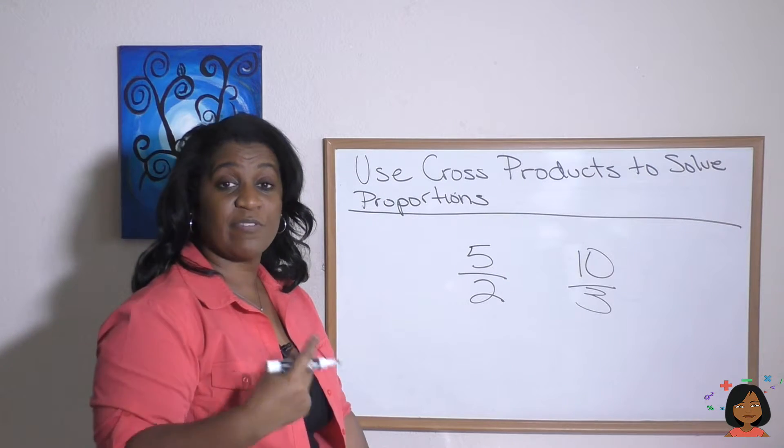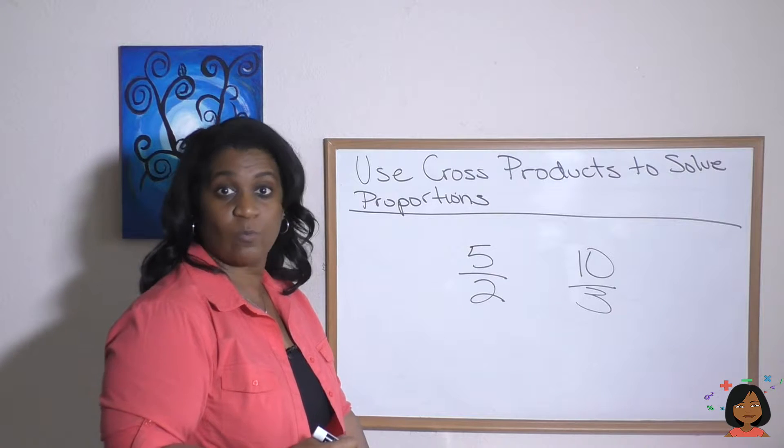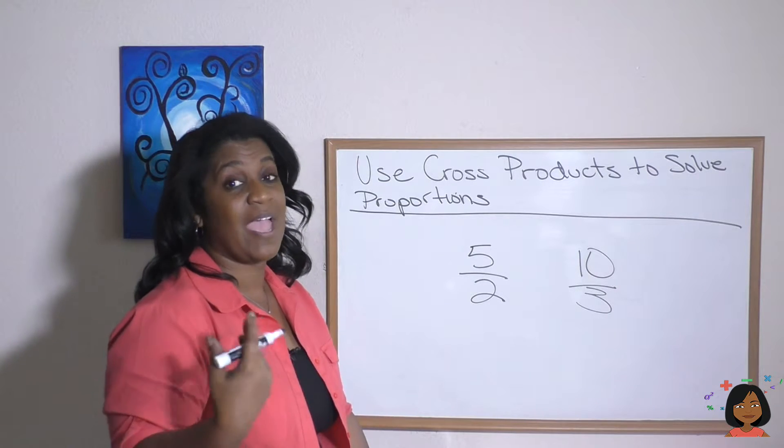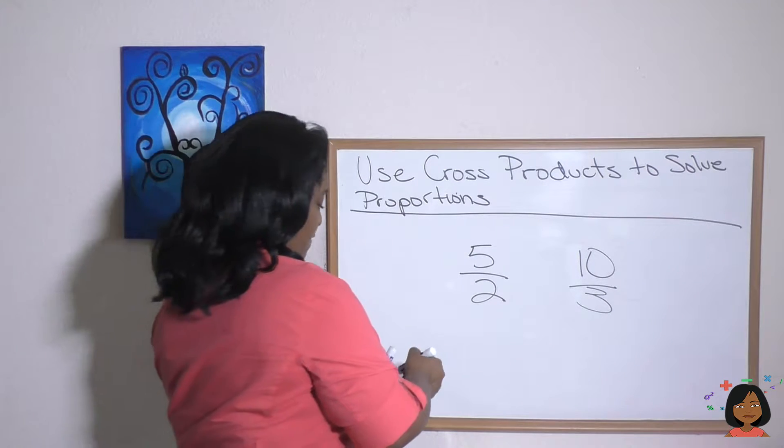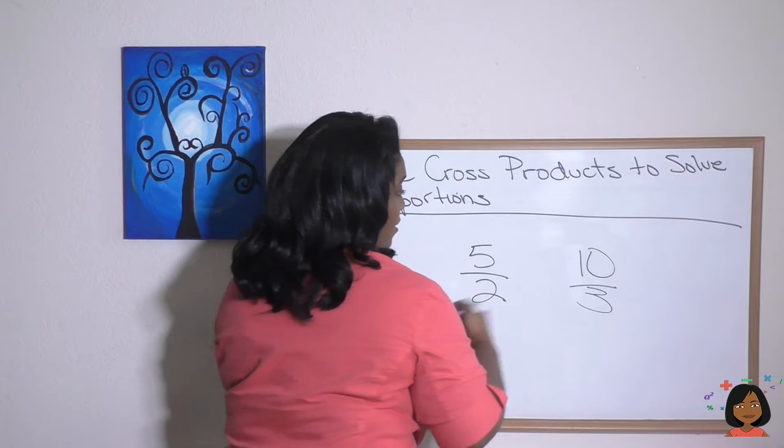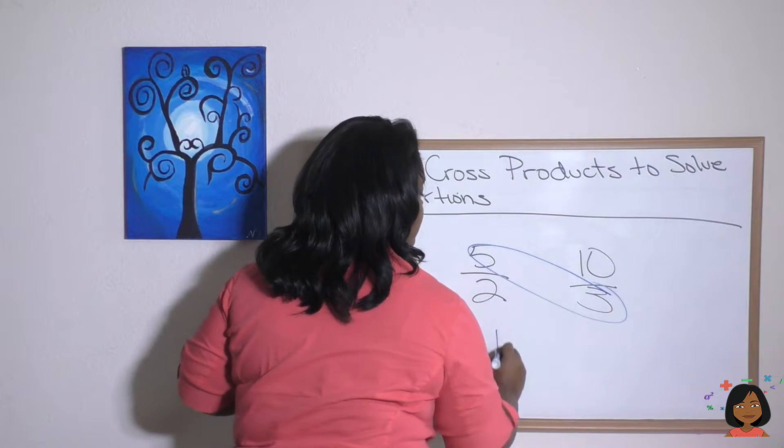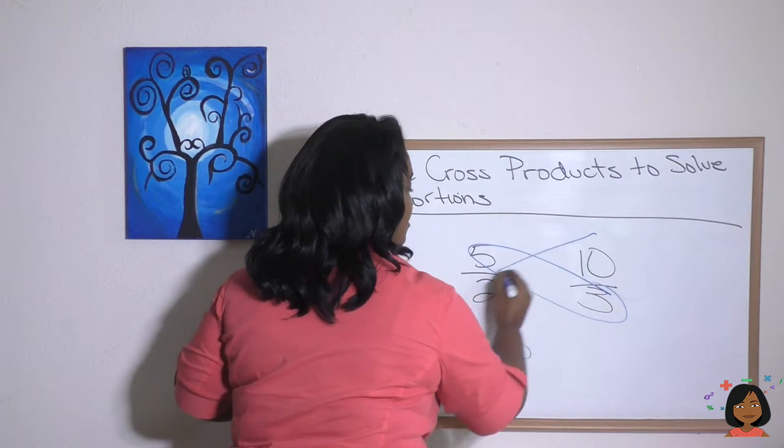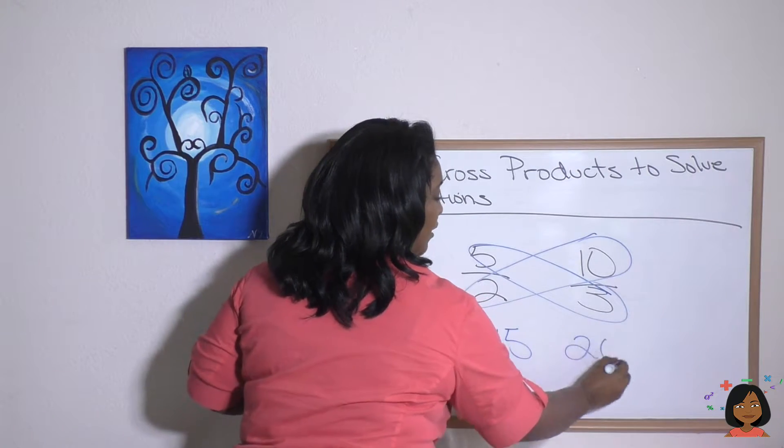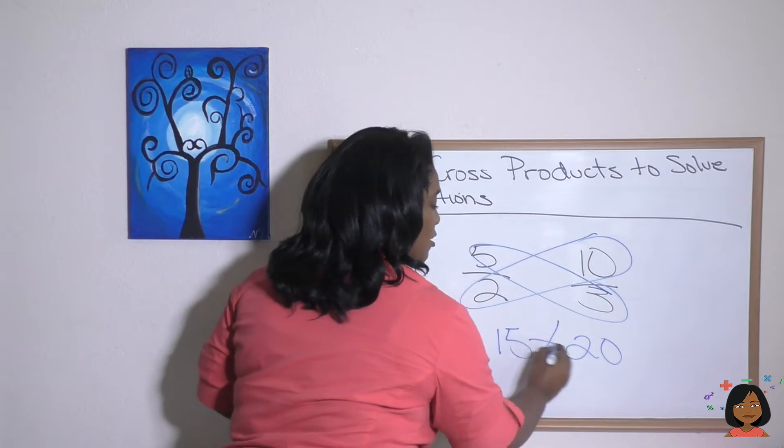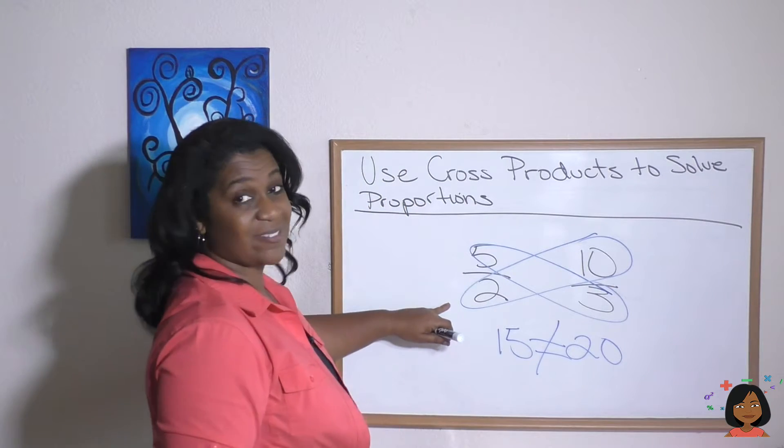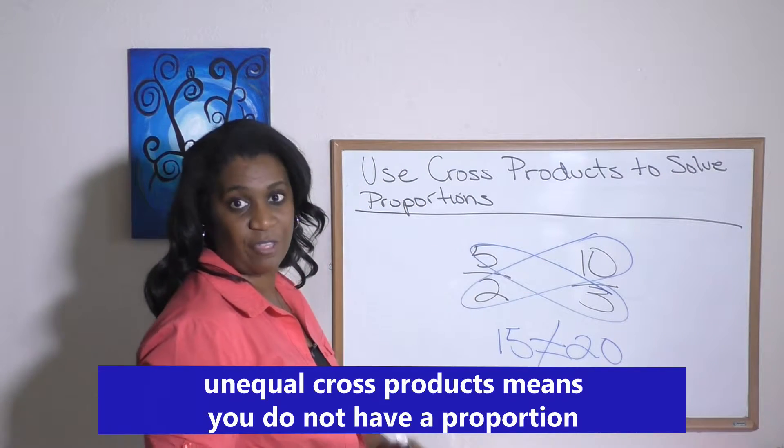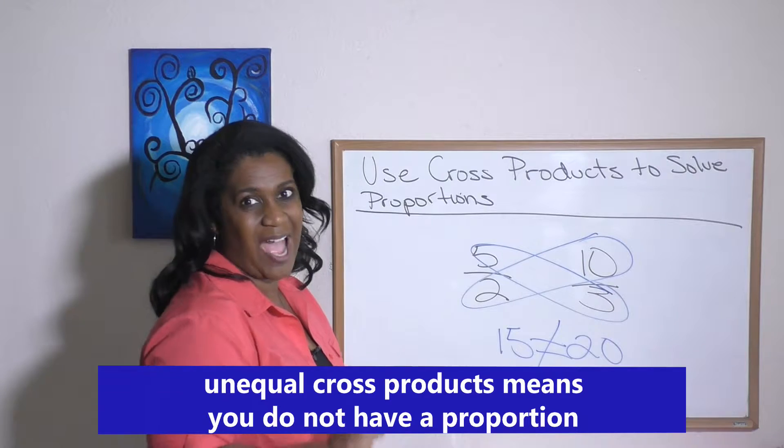What about this problem? Are these equal proportions? Well, let's try multiplying and get those cross products. Five times three is 15. 10 times two is 20. 15 does not equal 20. So that means that 5/2 does not equal 10/3. These proportions are not equal.